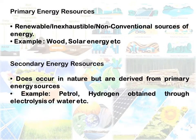Primary energy resources may be renewable or non-conventional — examples include wood and solar energy. Secondary energy resources do not occur in nature but are derived from primary energy. The difference between primary and secondary energy is that secondary energy is always derived from primary energy — examples include petrol and hydrogen obtained through electrolysis of water.